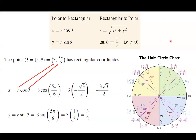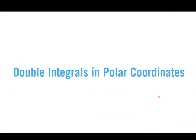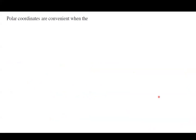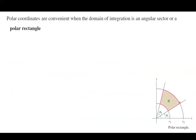One important aspect of polar coordinates is helping us to calculate the double integral. Polar coordinates are convenient when the domain of integration is an angular sector or polar rectangle. This is a circular region, or half a circle, or some sector of a circle. The region R has two radii R1 and R2, theta bounded between theta1 and theta2, and R bounded between R1 and R2 — that is how we describe a polar rectangle.